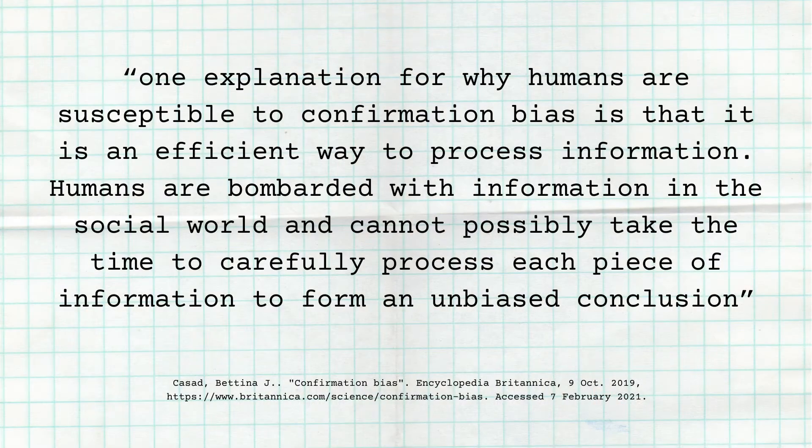So what do you think — is this a good thing or a bad thing, and why would our brains do this? Well, an article from Britannica found that one explanation for why humans are susceptible to confirmation bias is that it is an efficient way to process information. Humans are bombarded with information in the social world and cannot possibly take the time to carefully process each piece of information to form an unbiased conclusion. This means it's much easier for our brain to understand something when we can try and fit it in with the categories we already have in our head. Our brain then looks for qualities and words that confirm the ideas that we already have in our mind.